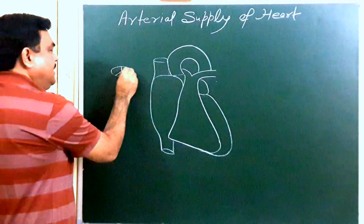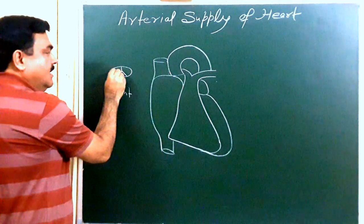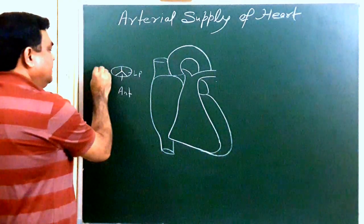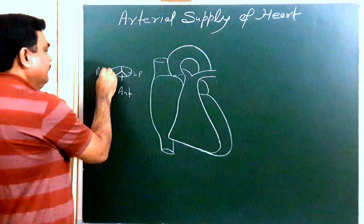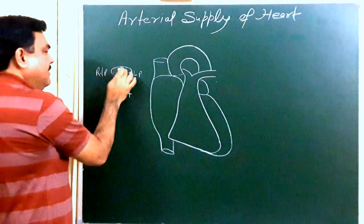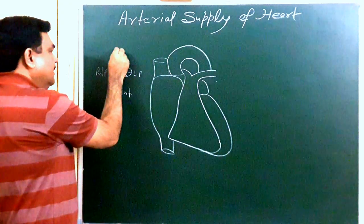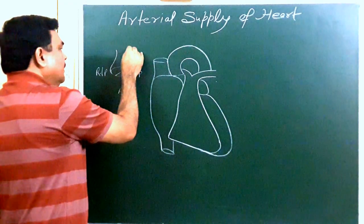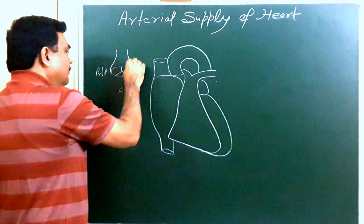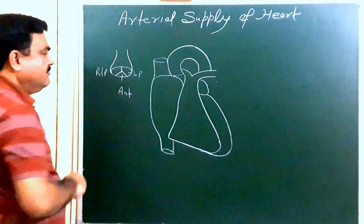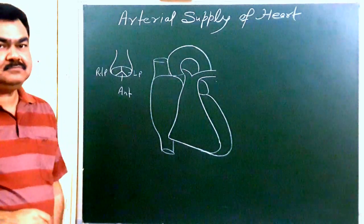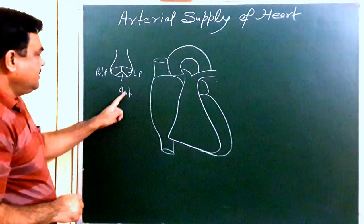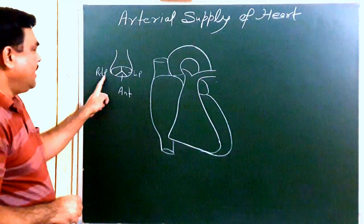There is a posterior cusp present on the left side — this is left posterior — and this is right posterior. And above this cusp, there is a tricuspid valve. So this is the tricuspid valve with its anterior cusp, left posterior, and right posterior.